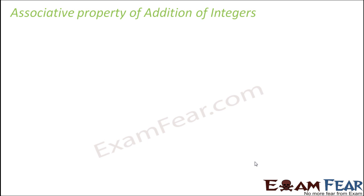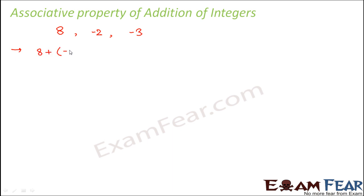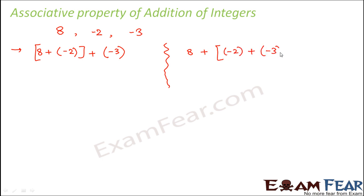First we will talk about addition. Let us consider three integers: 8, minus 2, and minus 3. You can randomly pick up any three integers. In the first case, we add them in this order: 8 plus minus 2, plus minus 3. In the second case, we do 8 plus minus 2 plus minus 3. Basically, in the first case you add the first two integers and then add the sum to the third integer.